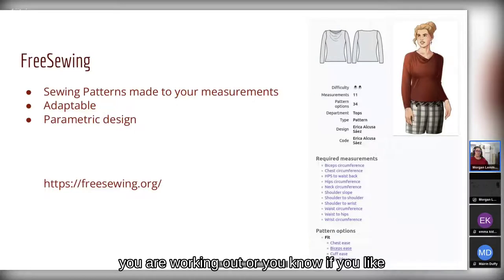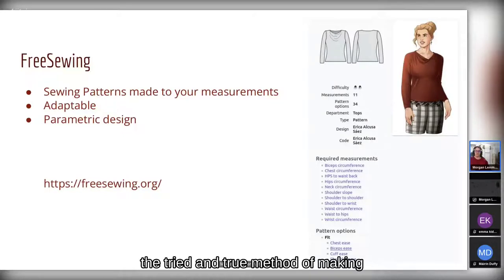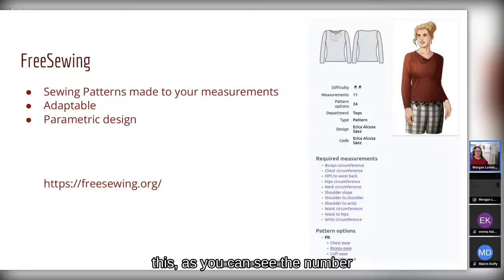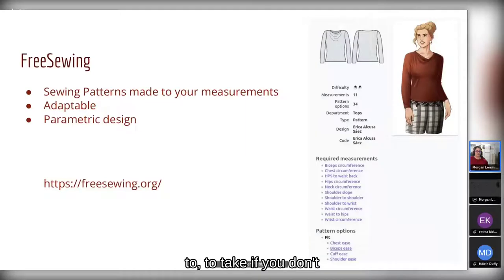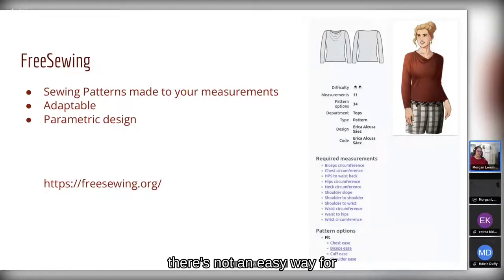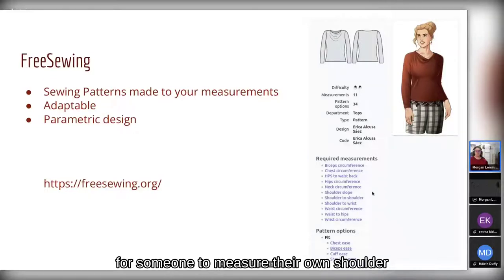This is great if you like working from specific patterns — the tried-and-true method of making clothing. However, there are still some limitations. The number of measurements required would be really difficult to take if you don't have an extra set of hands — specifically hands that know where to measure. For example, there's no easy way for someone to measure their own shoulder slope without a second pair of hands.